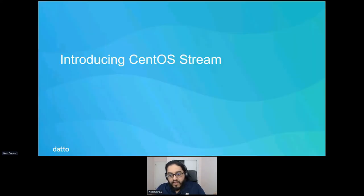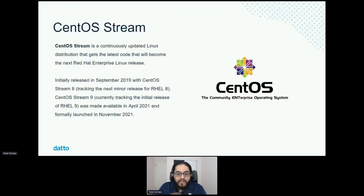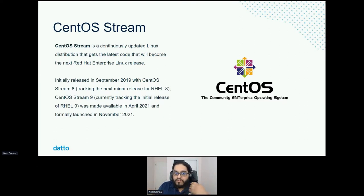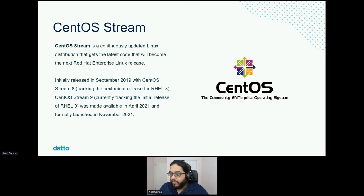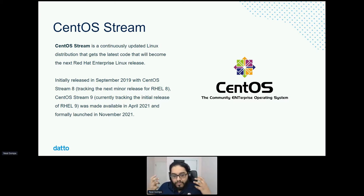But enough about that — let's talk about CentOS Stream. CentOS Stream is the distribution that provides a continuously integrated, continuously developed platform of what will become the next RHEL release. There are two major versions right now: CentOS Stream 8 and CentOS Stream 9, and those two versions have very different patterns.